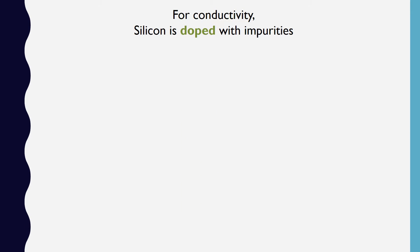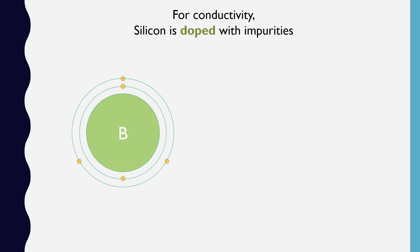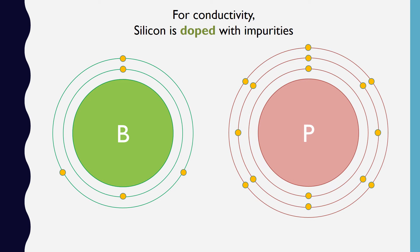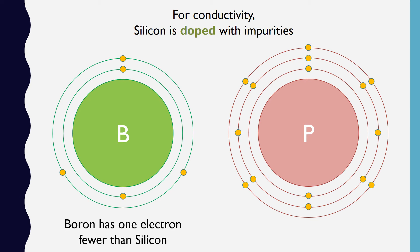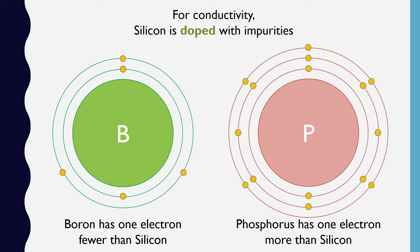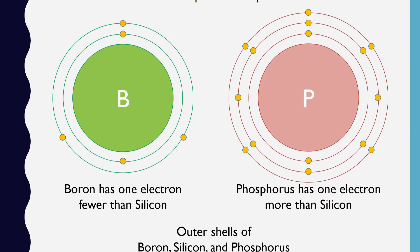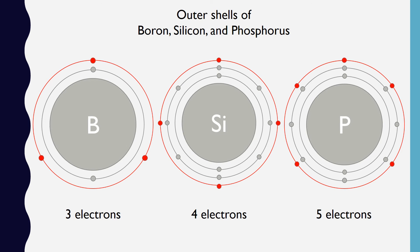Impurities can be introduced into our silicon lattice to allow for conductivity. This process, called doping, commonly introduces boron or phosphorus into the lattice structure at random locations. The reasons for using boron and phosphorus are many, but we'll look at just one. In their outermost valence shells, boron has one electron fewer than silicon, and phosphorus has one electron more than silicon, giving us three atoms with three, four, and five valence electrons to work with.